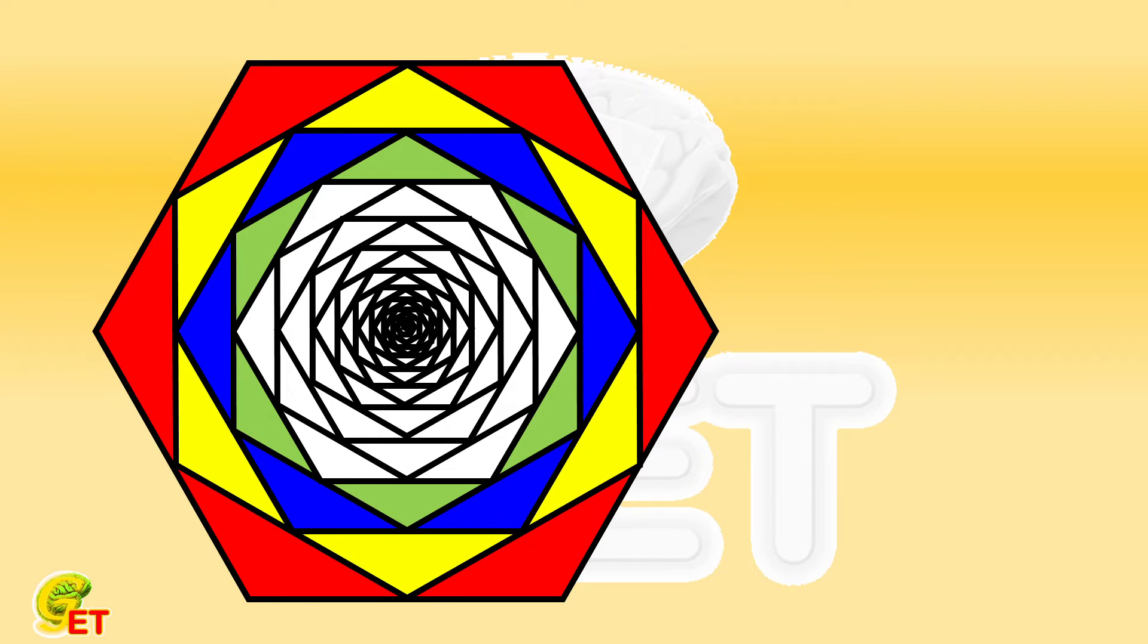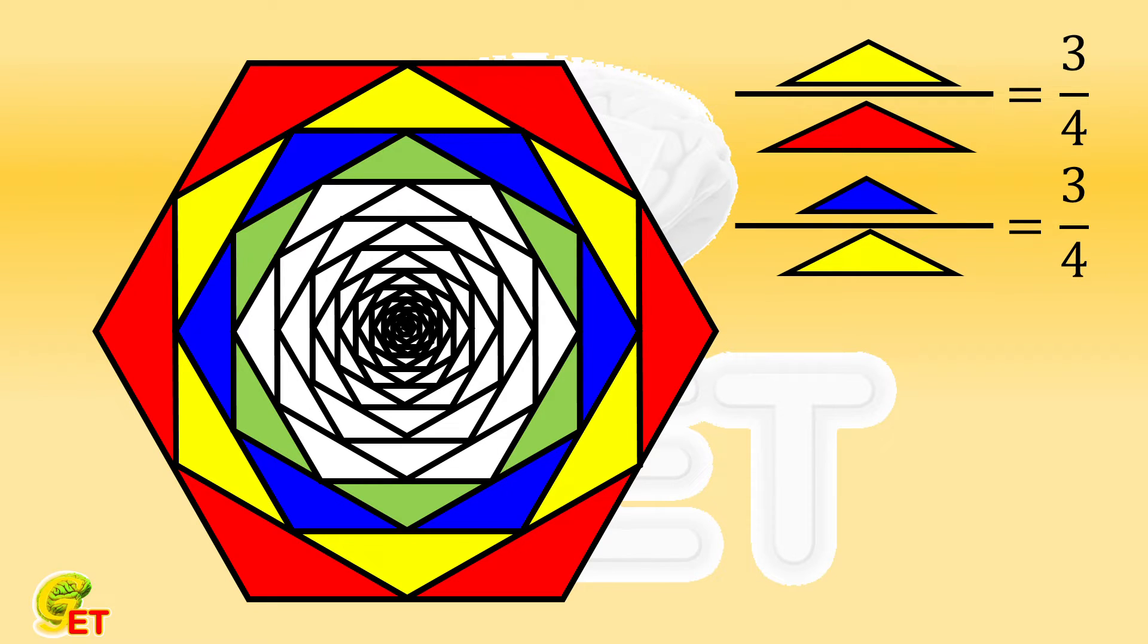We have already concluded that the ratio of the areas of the yellow triangles to the red triangles is 3 to 4. Similarly, that of the blue triangles to the yellow triangles is 3 to 4 as well, and that of the green triangles to the blue triangles is also 3 to 4.